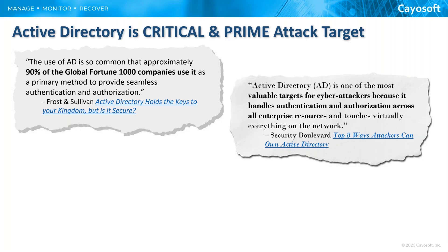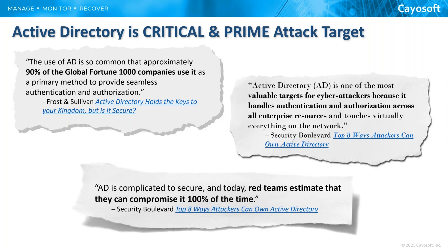Here are three quick quotes highlighting how topical this subject is. Frost and Sullivan estimates that 90% of global Fortune 100 companies use Active Directory as their primary authentication and authorization tool. According to Security Boulevard, Active Directory is the most valuable target for cyber attackers because it handles authentication across all your enterprises and touches everything in your network — door badges, telephone systems, email — virtually everything has to be checked. Red teams estimate they are successful 100% of the time when attacking an Active Directory that has nothing in place to protect it. Active Directory is complicated, with lots of touch points that can be neglected over time.